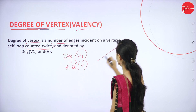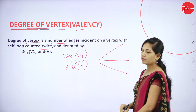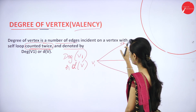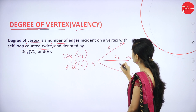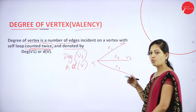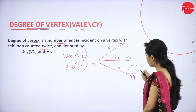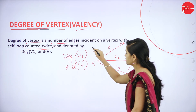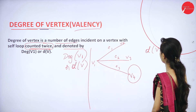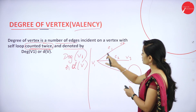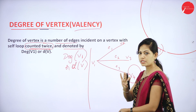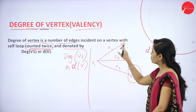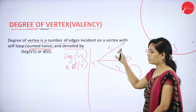For example, here I will draw a graph with vertices V1, V2, V3, and V4, and edges E1, E2, E3. V4 has a self-loop. Now, D(V1) — V1 is connected to V2, V3, and V4, so the degree of V1 is 3. V2 is connected to only V1, so D(V2) equals 1. V3 is connected to only V1, so D(V3) equals 1.